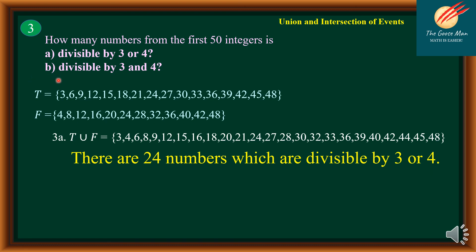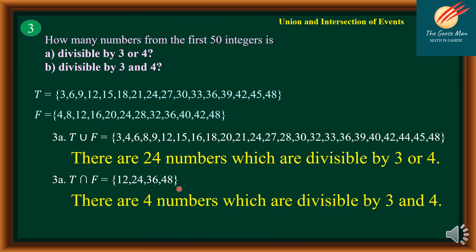Now let's find how many numbers from the first 50 integers are divisible by 3 and 4. Since we use the word 'and,' this is the intersection. T intersection F is equal to {12, 24, 36, 48}. Therefore, there are 4 numbers which are divisible by both 3 and 4.